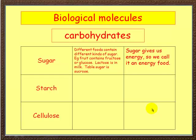Let's look at some of the functions and uses. First of all, sugar. Different foods contain different kinds of sugar. For example, fruit contains fructose, which is a sugar, or glucose. Lactose is another sugar found in milk. The stuff you're used to putting in your tea or coffee is called sucrose. Why do we need it? Well, sugar gives us energy, so we tend to call it an energy food.